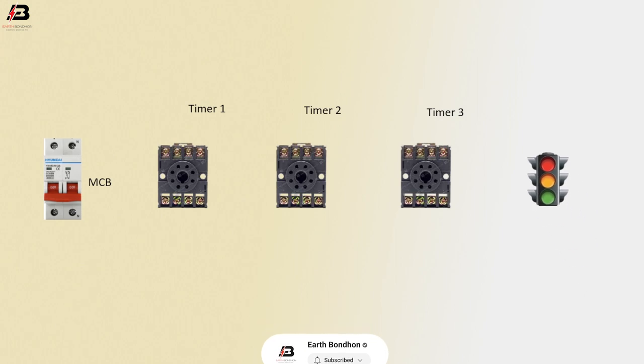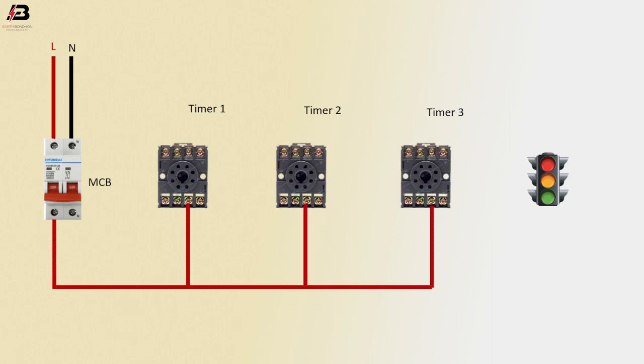Traffic light. Phase connection to MCB circuit breaker. Neutral connection to MCB circuit breaker. Phase connection from MCB to connect all timers. Neutral connection from MCB to connect light.